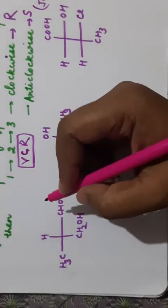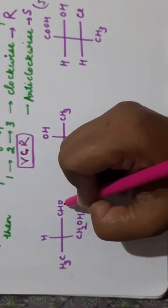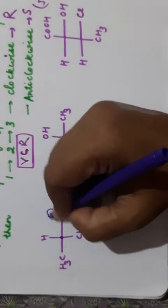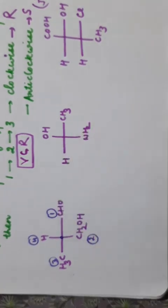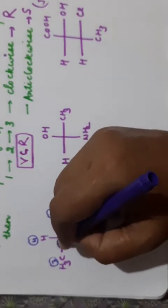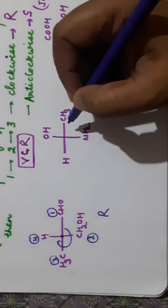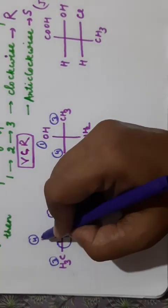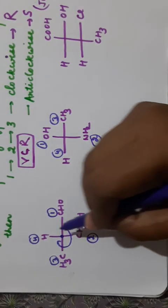Now let's apply this. Assign priorities to the groups: CHO has a double-bonded oxygen, so it gets first priority. Assign second, third, and fourth priorities accordingly. Moving from 1→2→3, we get a clockwise rotation. The lowest priority group (4th) is in the vertical position. Vertical + clockwise = R, so the configuration is R.